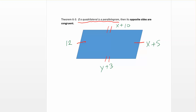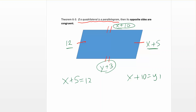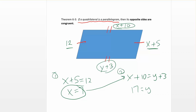Here's a quick example. We're asked to find x and y. Since opposite sides are congruent, x plus 5 equals 12, so x equals 7. We also know that x plus 10 equals y plus 3. Substituting x equals 7, we get 7 plus 10, or 17, equals y plus 3. Subtracting 3 from both sides, y equals 14. That's a quick example of how we might use a little algebra in our homework problems.